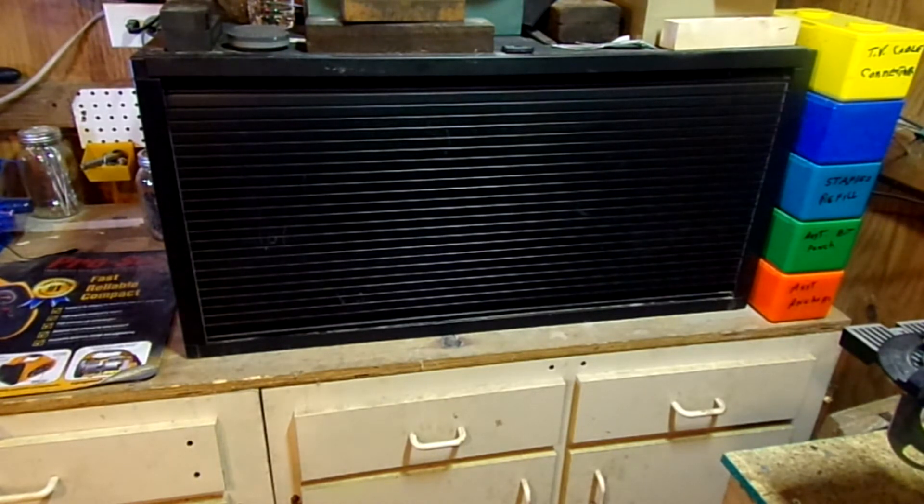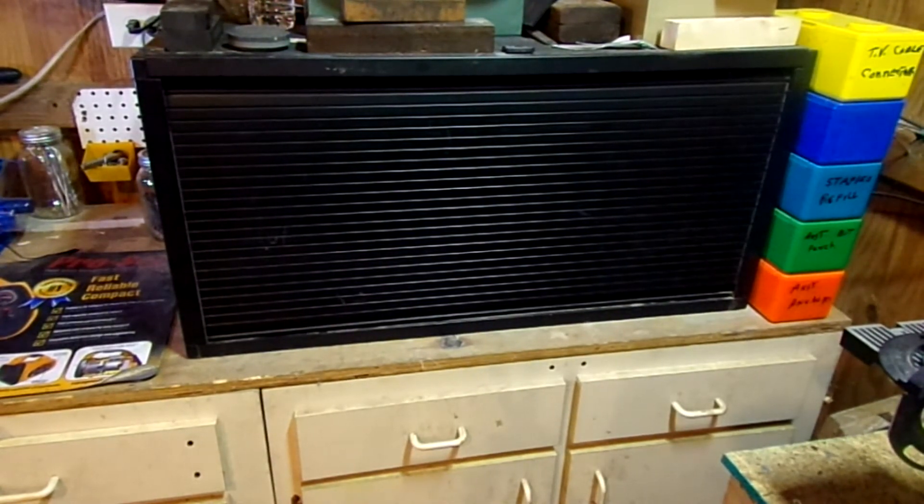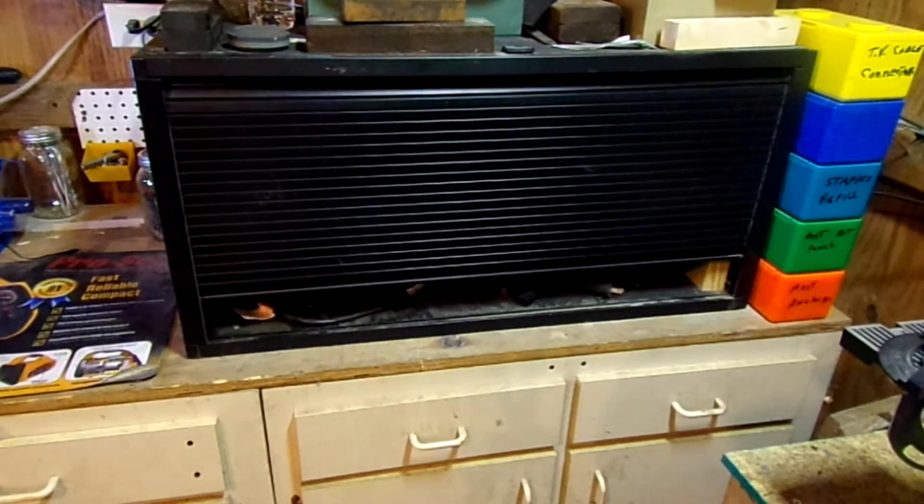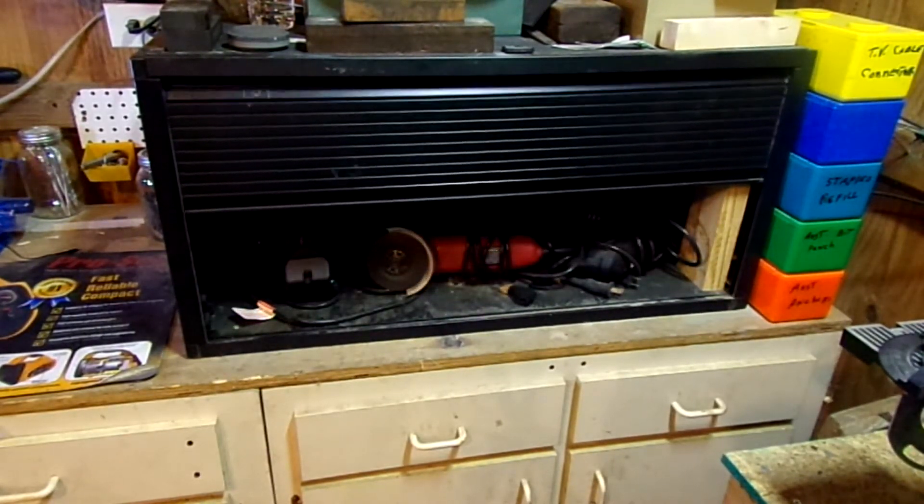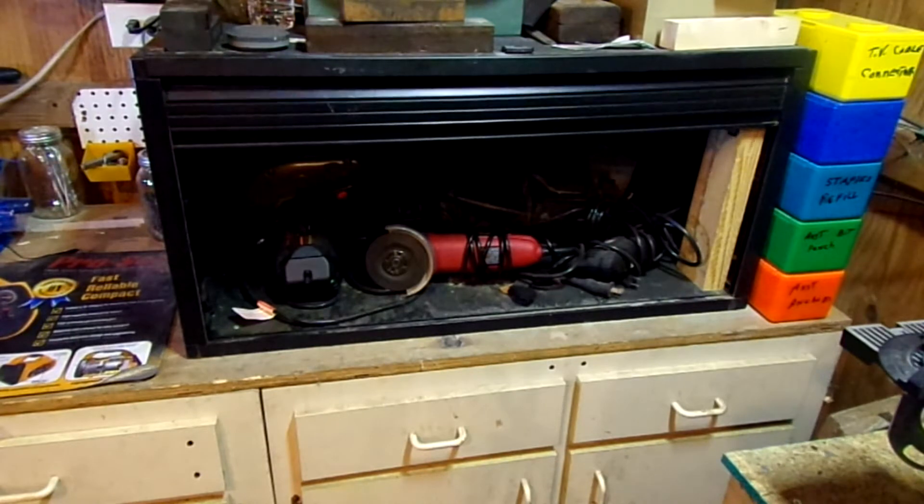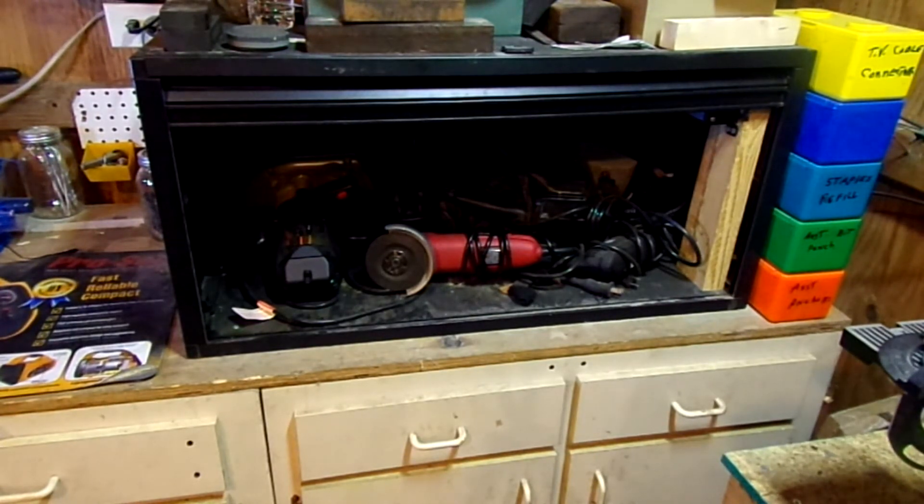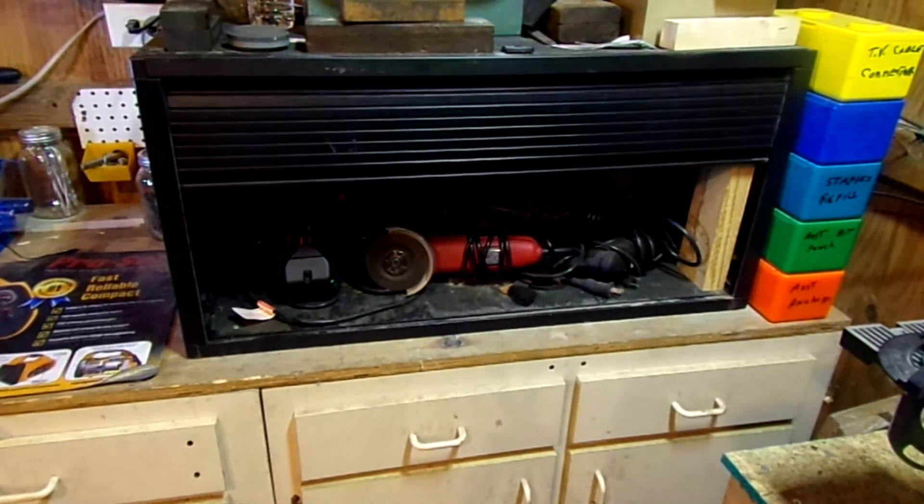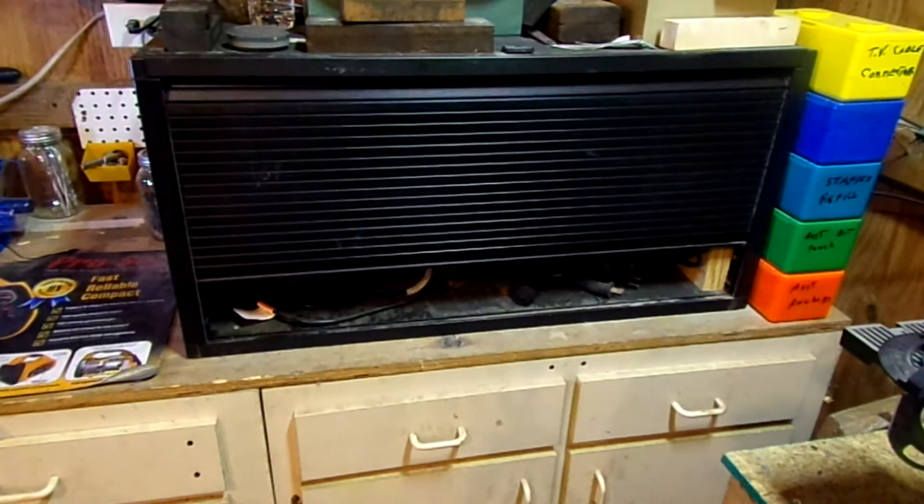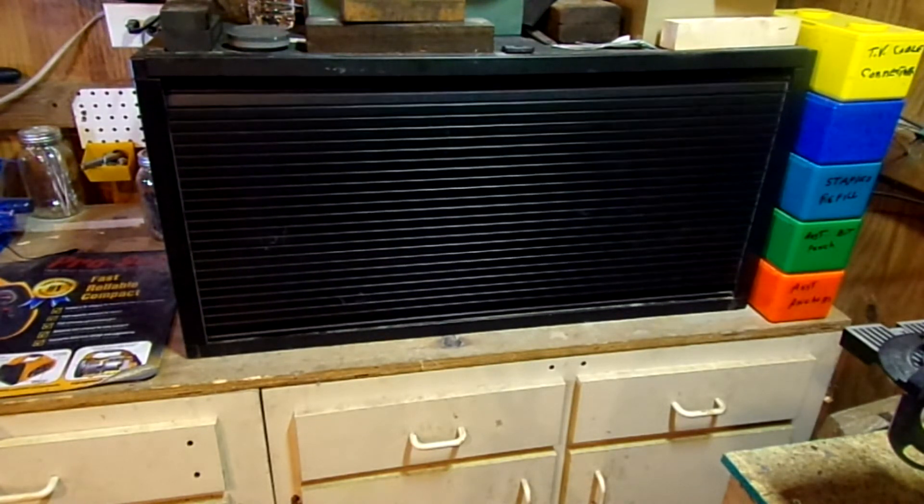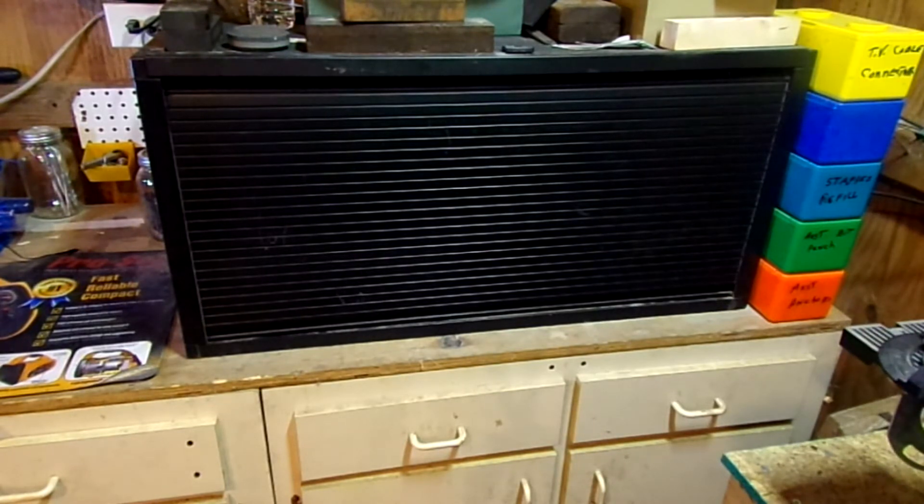It runs off of a linear actuator motor I salvaged from an automated couch set we had. We're getting rid of it and it just didn't feel right to throw away all those motors. So this works with a switch over here on the wall. Goes all the way up and all the way down. It's actually very simple to make. So let's get in tighter and I'll show you how it works.